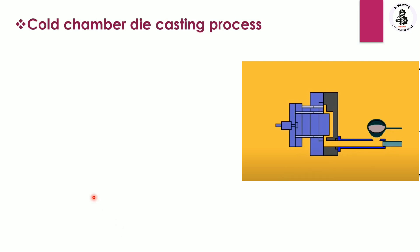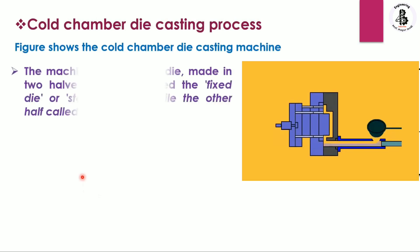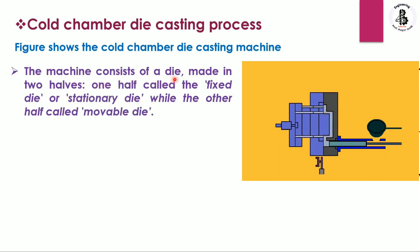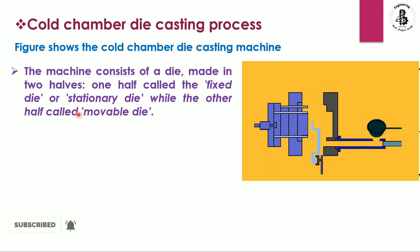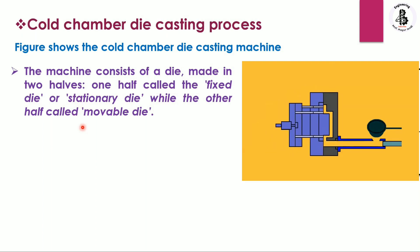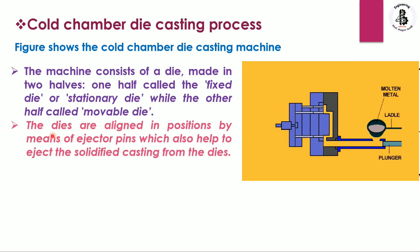In the cold chamber die casting process, the machine consists of a die made in two halves — one half is fixed and another is movable. The dies are aligned in position by means of ejector pins, which also help to eject the solidified casting from the die.